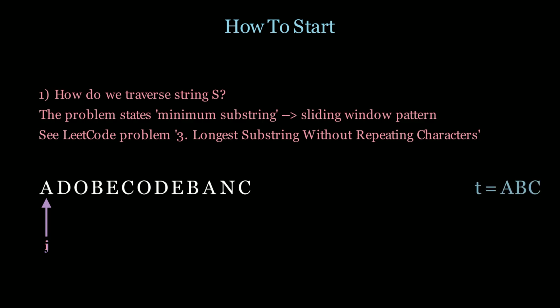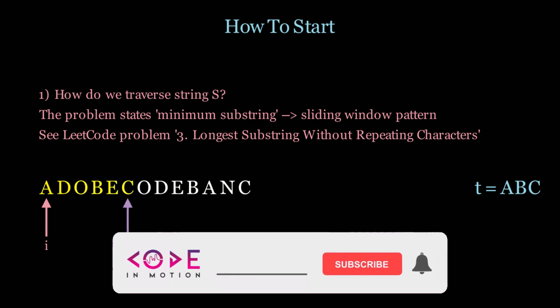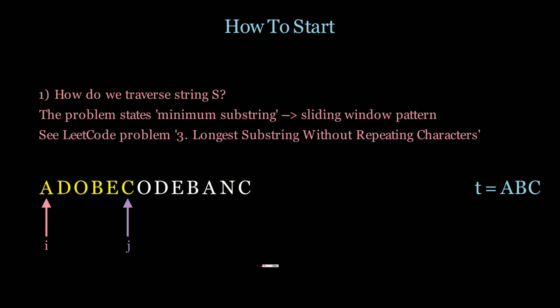I'll give a brief overview of the sliding window technique. We have two pointers i and j, and the idea is to move the j pointer as far as we can to make our constraints true. The question we're asking ourselves every time we move j is: do I contain all the characters of t — in this case a, b, c? You'll notice that the substring between i and j does contain a, b, and c.